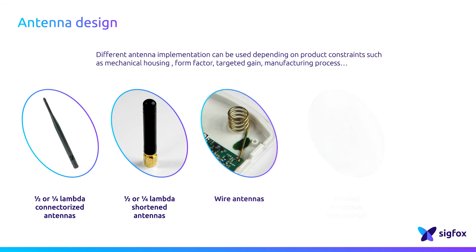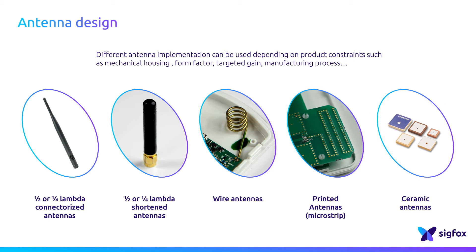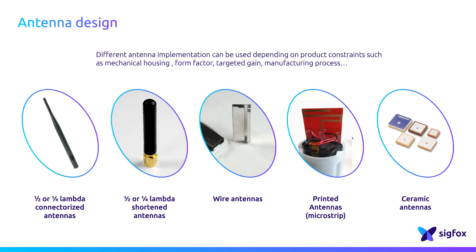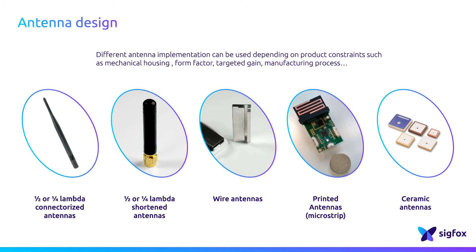Many antenna technologies are available. A half-wavelength antenna will usually provide you with optimal performance — it is suitable for a device that has no size or design constraints. PCB printed technology enables a high-integration antenna within the board while drastically reducing the dimensions of the antenna. Wired antennas and ceramic antennas are also used for IoT devices.